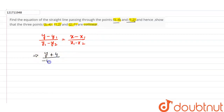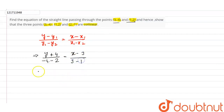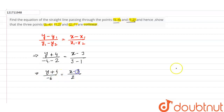Here, y1 is equal to -4 and y2 is equal to 2. x1 is equal to 3 and x2 is equal to 1.